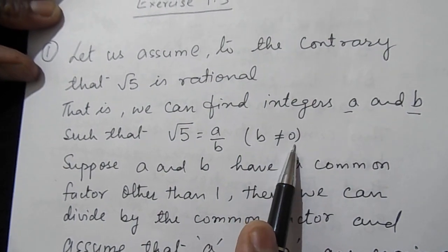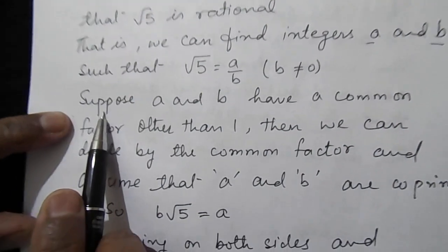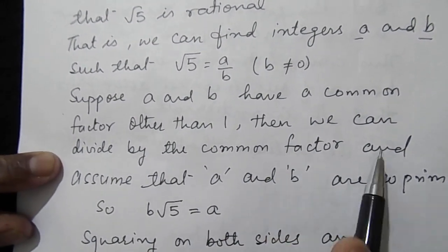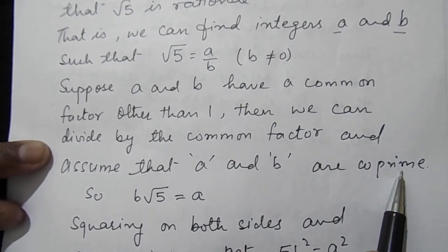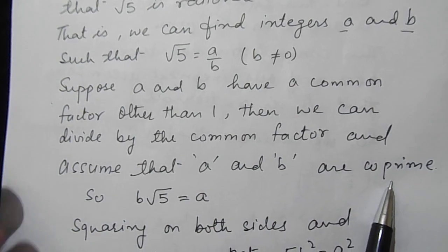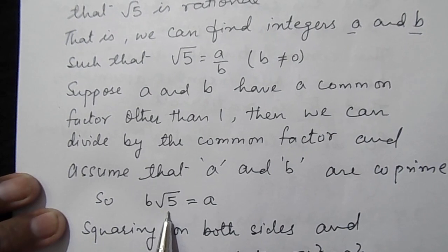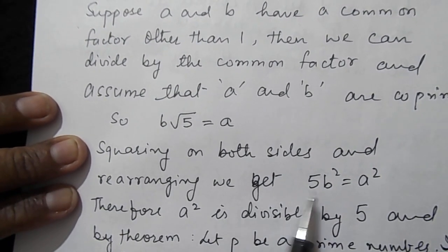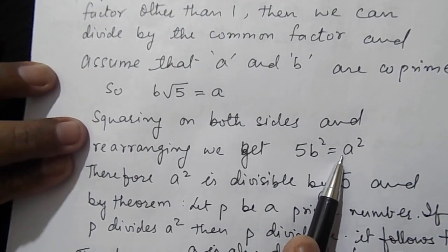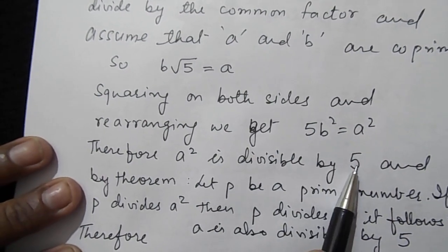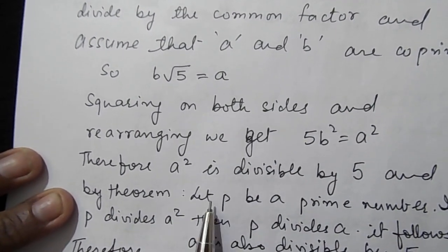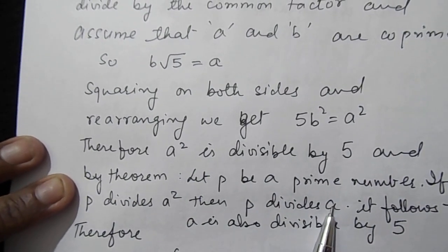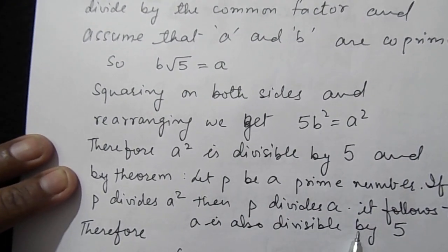Suppose a and b have a common factor other than 1. We can divide by the common factor and assume a and b are co-primes, meaning they have no common factor. So we write √5·b = a. Squaring both sides and rearranging, we get 5b² = a². Therefore a² is divisible by 5, and by Theorem 1.3, it follows that a is also divisible by 5.